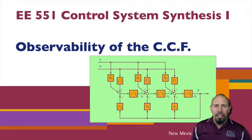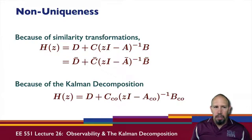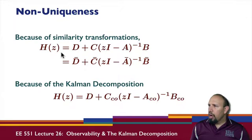The observability of the controllable canonical form. We saw the controllable canonical form before, and if you recall, because of similarity transformations, even when I do a similarity transformation, the transfer function H(z) is the same regardless of which set of coordinates we use, whether the original coordinates or the transformed coordinates.